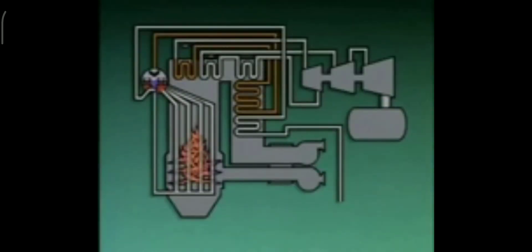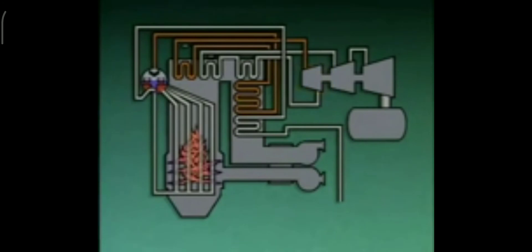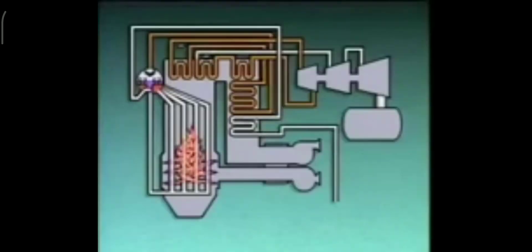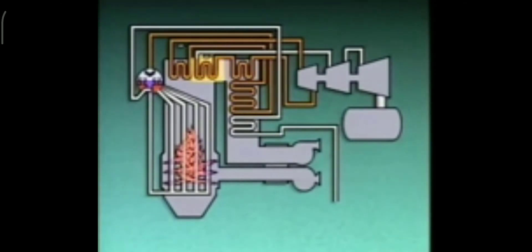From the secondary superheater, the steam goes to the high pressure, or HP, section of the turbine. As the steam flows through the HP section, it gives up a lot of its energy and its temperature and pressure drop. Before it moves on to the other sections of the turbine, the steam returns to the boiler, where its temperature is increased as it flows through one or more reheaters. Reheaters are very similar to superheaters — they use heat from the boiler furnace or from hot combustion gases to raise the temperature of the steam. This boiler has a primary reheater that the steam enters first as it comes from the high pressure section of the turbine. After the steam flows through the primary reheater, it moves on to a secondary reheater.